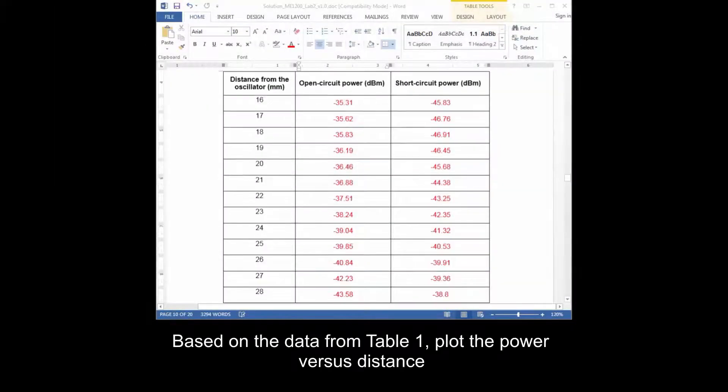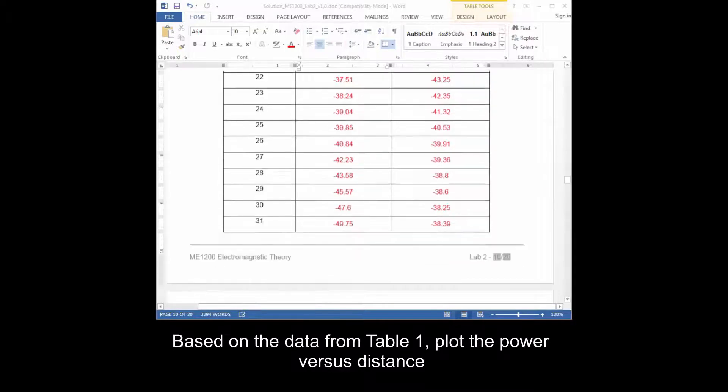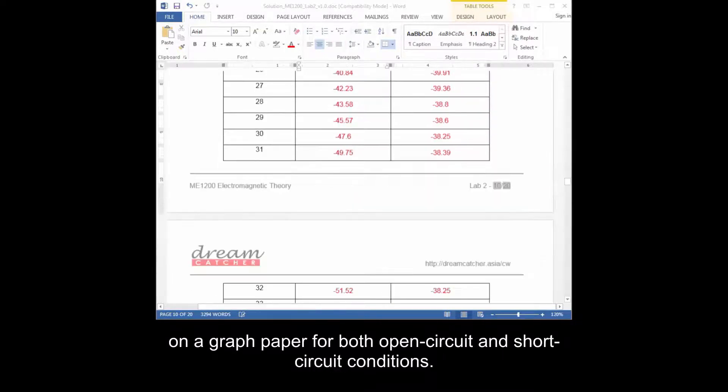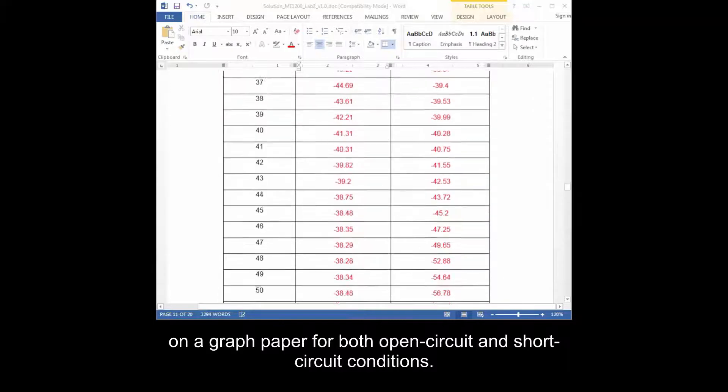Based on the data from table 1, plot the power versus distance on a graph paper for both open circuit and short circuit conditions.